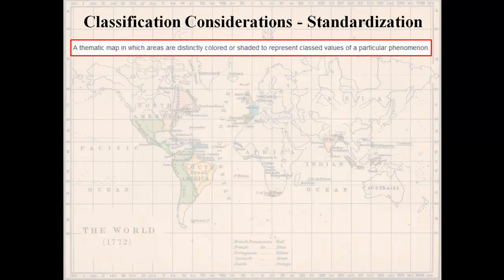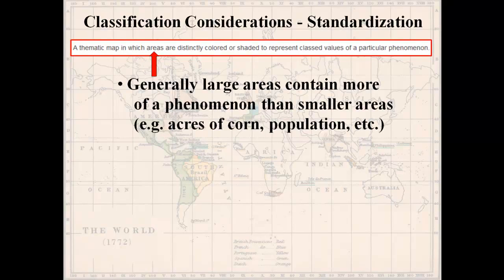Let's look at standardization. A choropleth map involves areas and classed values, but the polygons on your map are generally not all going to be the same size — some areas will be larger, some smaller. Generally, large areas contain more of a phenomenon than smaller areas. For example, if we have a state divided into counties and it grows corn, there will likely be more acres of corn in larger counties and fewer in smaller counties.